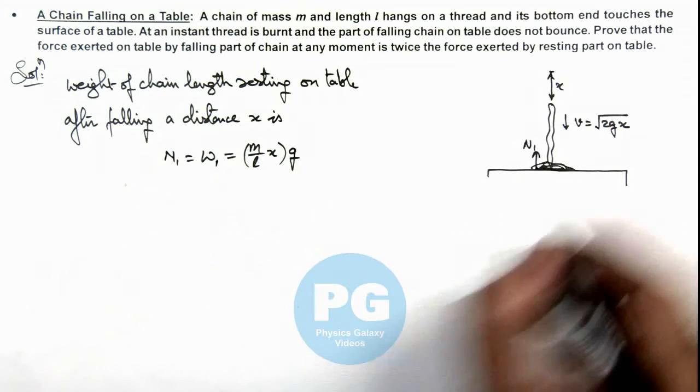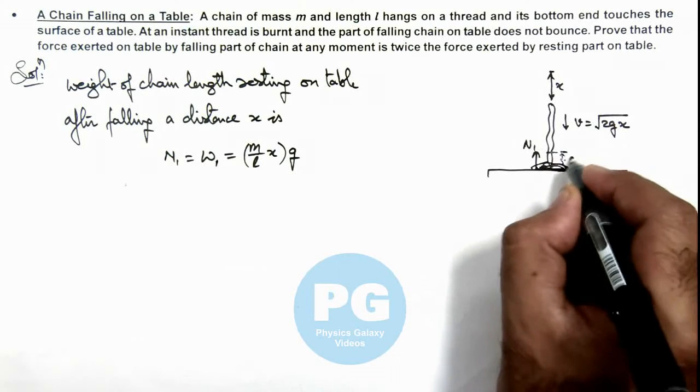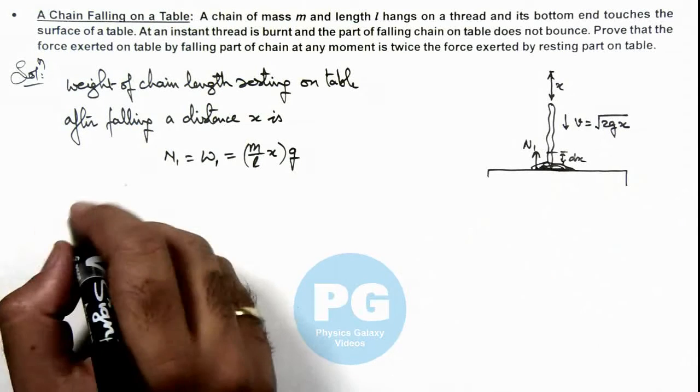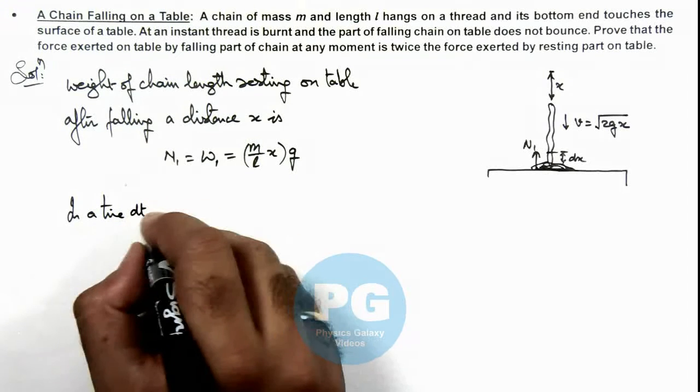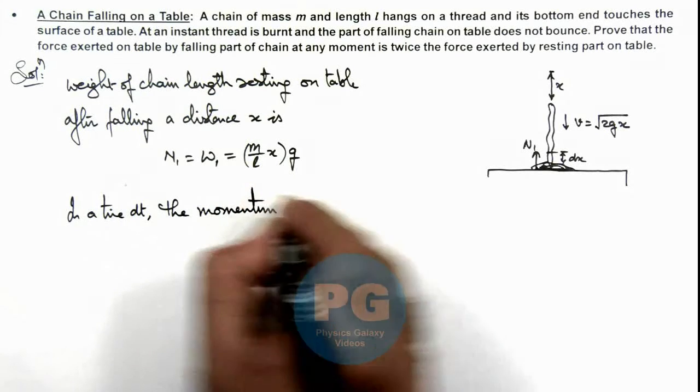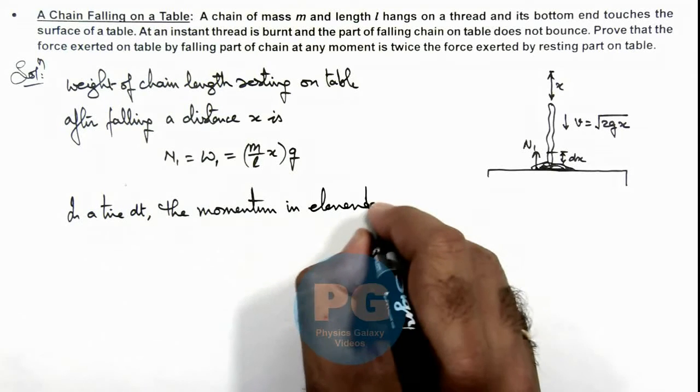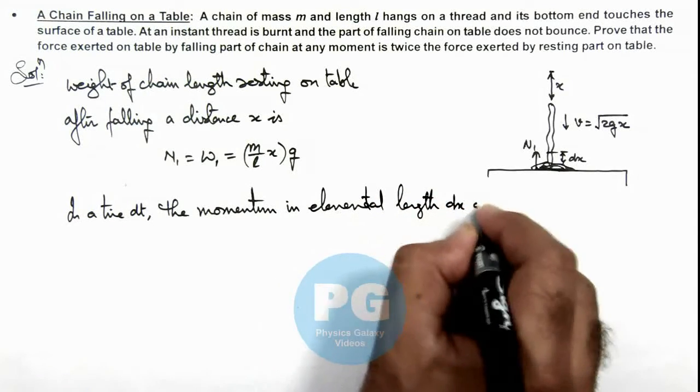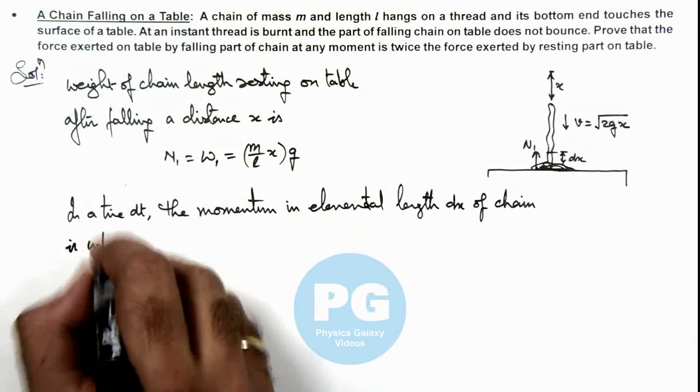And if we talk about the falling part of chain, and if we consider a small elemental length dx just above the table, so here we can write in a time dt, the momentum in elemental length dx of chain is imparted to table.